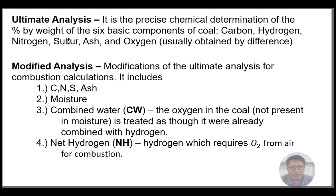Modified analysis is a modification of the ultimate analysis for combustion calculations. It includes carbon, nitrogen, sulfur, ash, moisture, combined water (CW), oxygen in the coal not present in moisture (treated as already combined with hydrogen), and net hydrogen — which is the hydrogen that requires O2 from air for combustion.